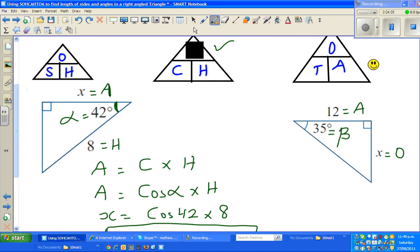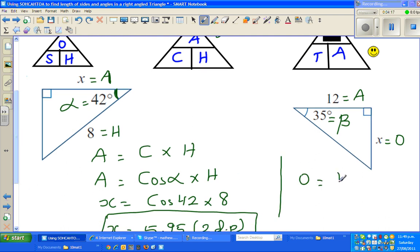And now I want to find O, so I need to cover up O. So if you cover up O, what should you do? So O is equal to T times A. And O is O, and T stands for tan beta, times A is A. Let us substitute now. So X is tan beta, beta is 35 degrees, times A is 12.